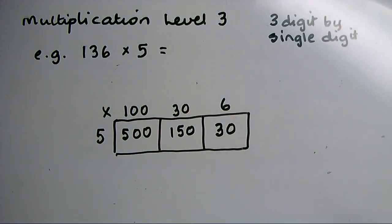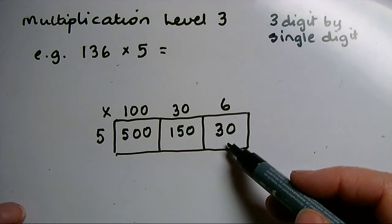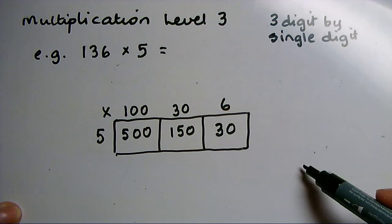To get my final answer, I need to add together the numbers in each of those three boxes. I'm going to write them at the side underneath each other in place value as I did when I was adding.